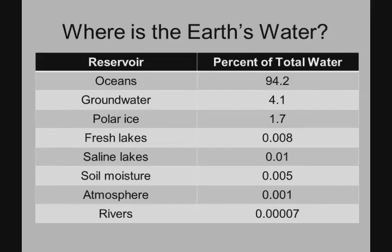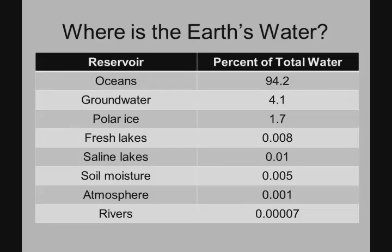It's worth thinking about where water is actually stored in various parts of the Earth's system. Most of the Earth's water is stored in the oceans — 94% of the total water on Earth. That's great for sea life, but it's not great for humans because we require fresh water. A lot of the fresh water is locked up in groundwater, fresh lakes and so on, but it only forms a very small proportion of the total water on Earth, which is why it's very precious and needs to be protected.